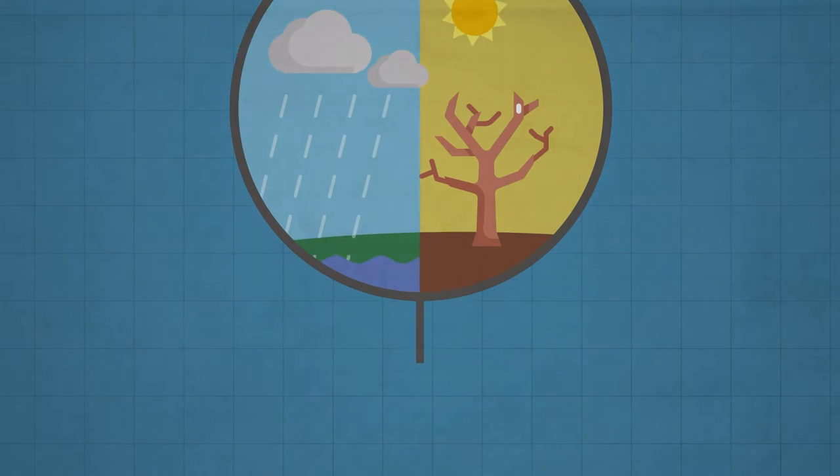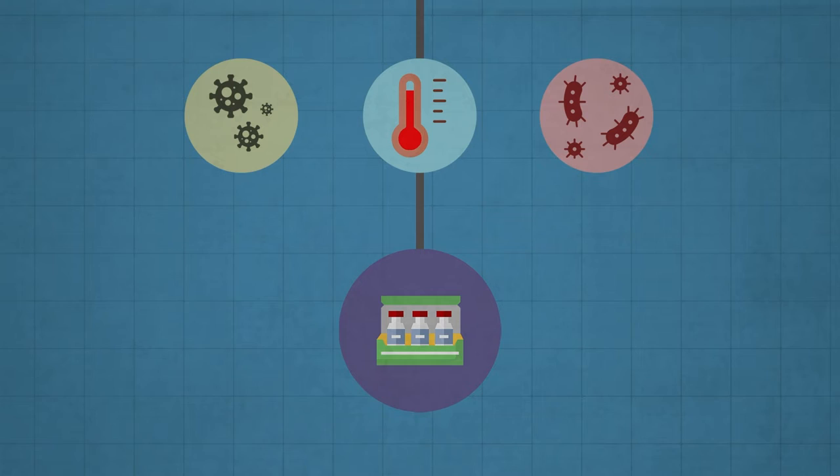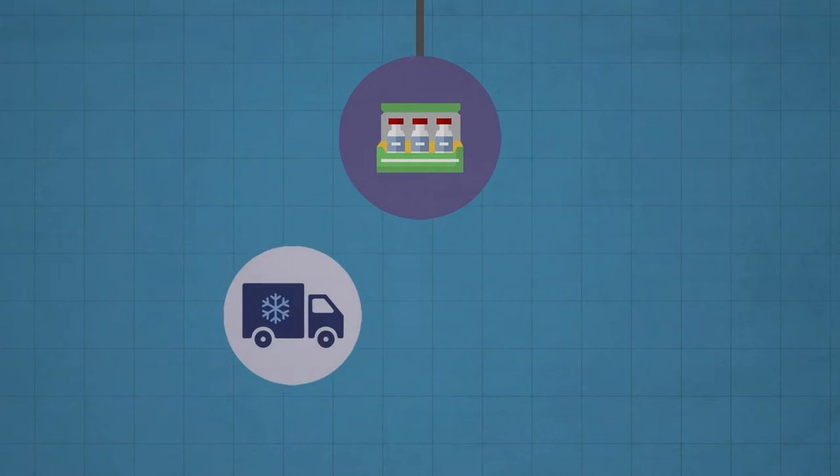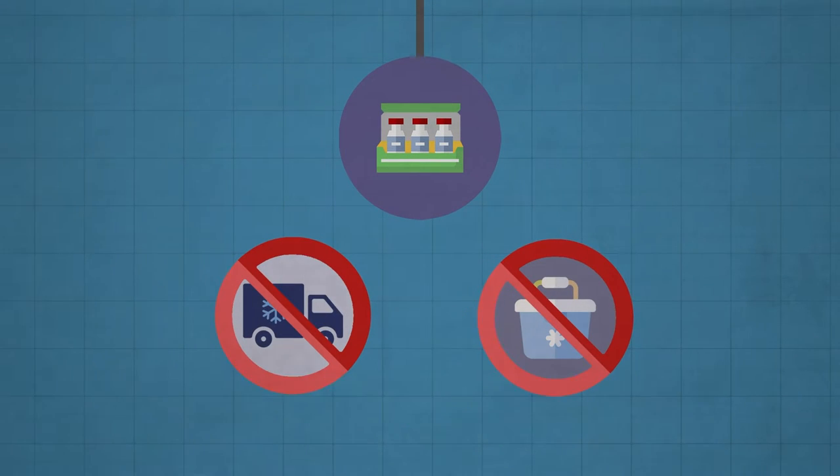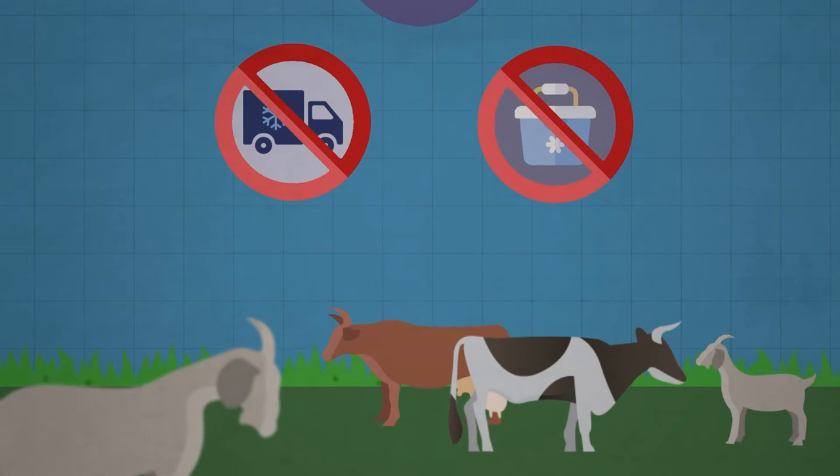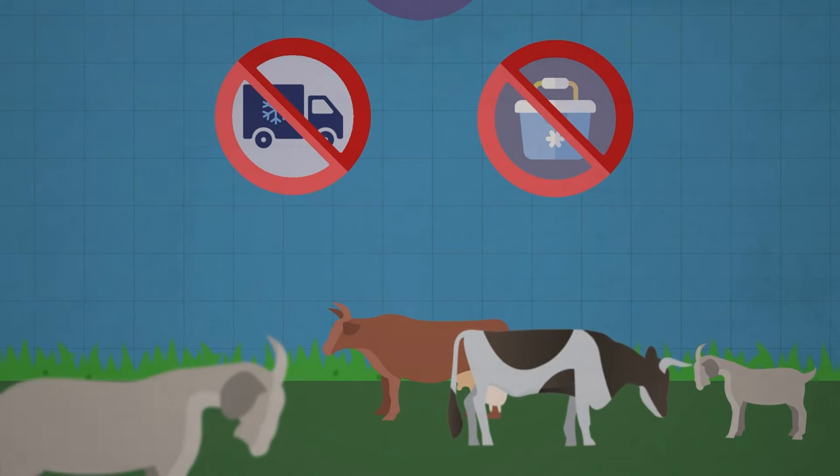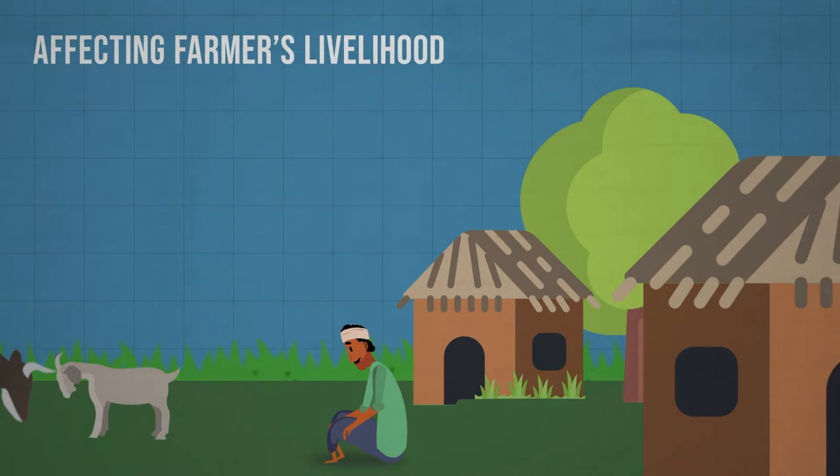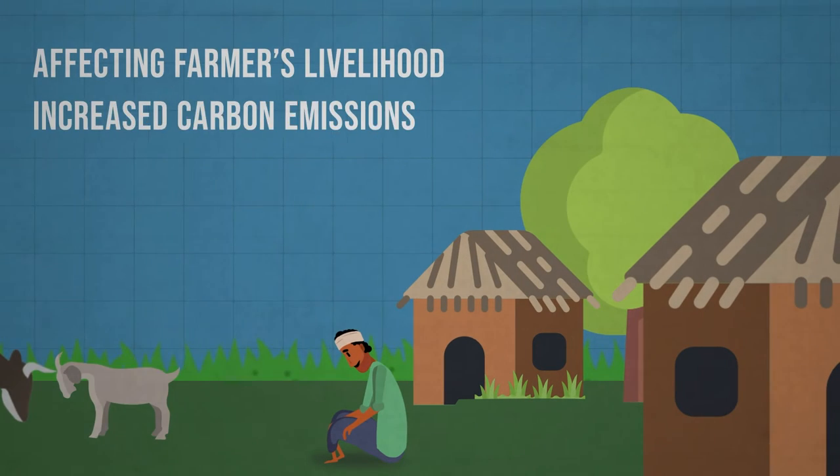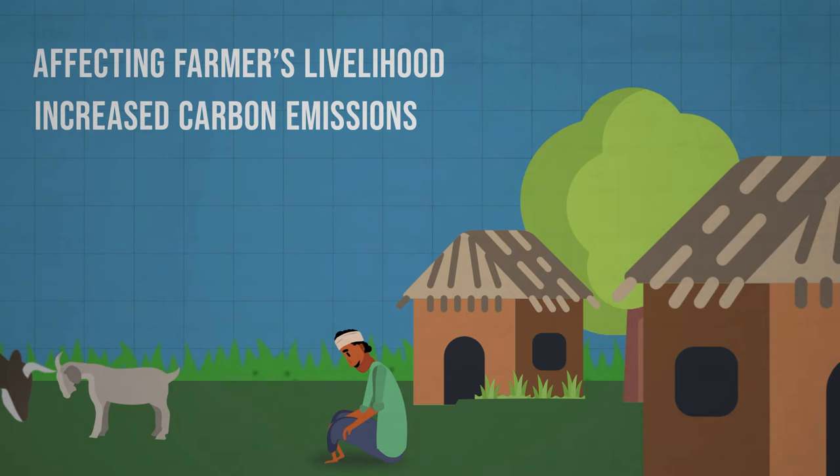Climate-related health risks increase the demand for vaccines, but lack of refrigerated transport and storage facilities for vaccines in rural areas worsens the diseases and mortality rates in animals. This not only affects farmers' livelihood, but also increases carbon emissions from the livestock sector.